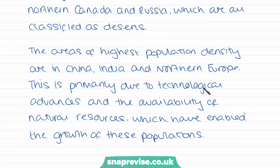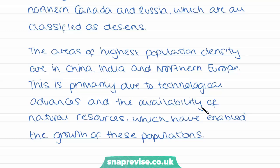Then state another trend: the areas of highest population density are in China, India, and Northern Europe. This is primarily due to technological advances and the availability of natural resources which have enabled the growth of these populations. Once again, state the pattern picked out from the map and then comment as to why this is the case — the technological advances in these areas and the availability of natural resources.